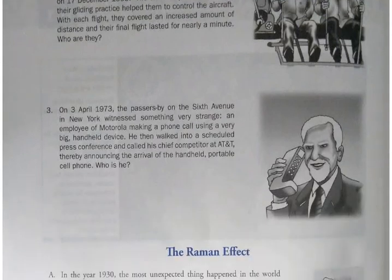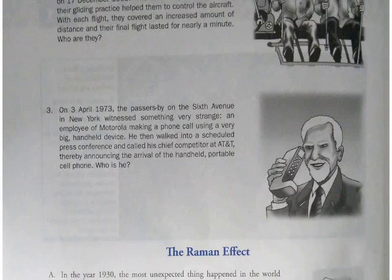The next person: on 3rd April 1973, the passers-by on the 6th Avenue in New York witnessed something very strange. An employee of Motorola making a phone call using a very big handheld device. He then walked into a scheduled press conference and called his chief competitor at AT&T, thereby announcing the arrival of the handheld portable cell phone. Who is he?